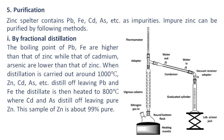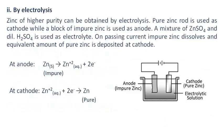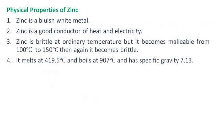This sample of zinc is about 99% pure. By electrolysis: Zinc of higher purity can be obtained by electrolysis. A pure zinc rod is used as cathode while a block of impure zinc is used as anode. A mixture of zinc sulfate and dilute sulfuric acid is used as electrolyte. On passing current, impure zinc dissolves and an equivalent amount of pure zinc is deposited at the cathode.